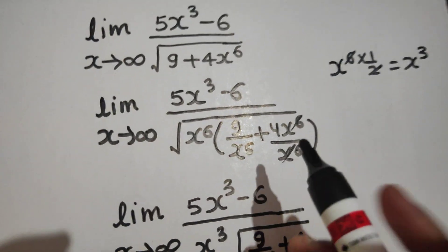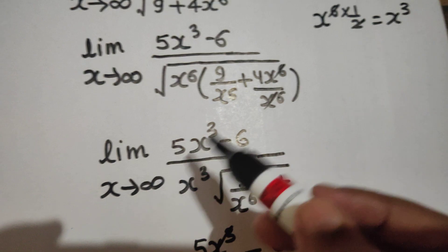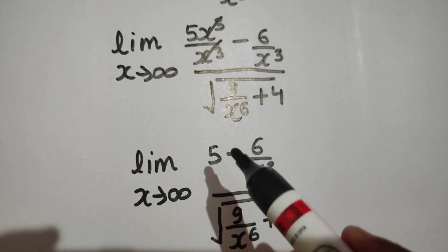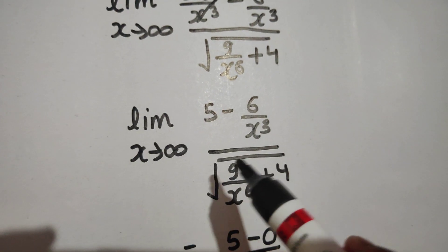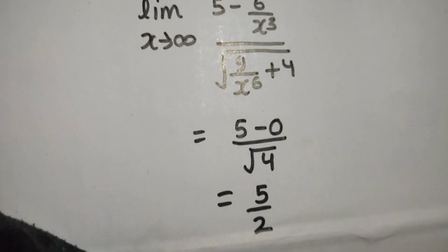So again, this was simple, isn't it? We just took x⁶ common, took it out of the root, divided both the terms of the numerator, and we got a brilliant scenario of 5 - 6/x³ and 9/x⁶. Both of them became 0, you are left with 5 - 0 divided by √4.